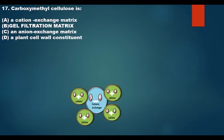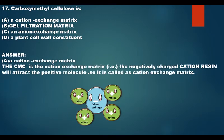Carboxymethyl cellulose — the options are: cation exchange matrix, gel filtration matrix, anion exchange matrix, and plant cell wall constituent. The answer is A, cation exchange matrix. CMC is the cation exchange matrix; the negatively charged resin will attract positive molecules. Cations are positively charged and anions are negatively charged. Cation exchangers are negatively charged and attract positively charged cations.